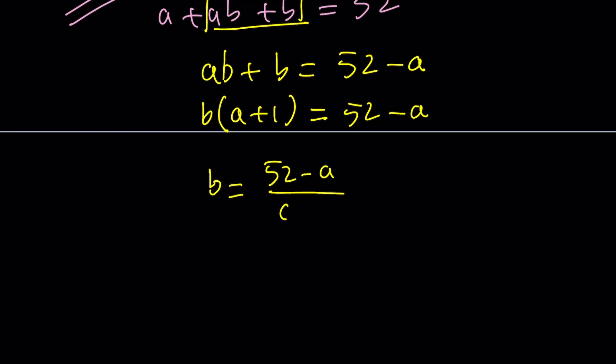Now at this point, it could be guess and check. You could just plug in values for a until you make it work. For example, if a is equal to 3, is 49 divisible by 4? The answer is no. If a is equal to 2, is 50 divisible by 3? No, those values do not work. So we kind of have to do it in a smarter way.